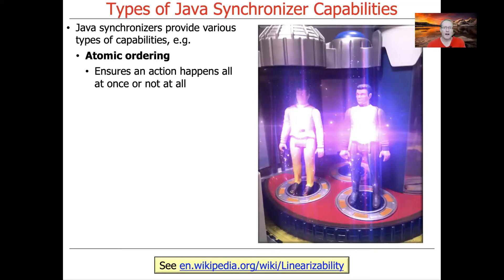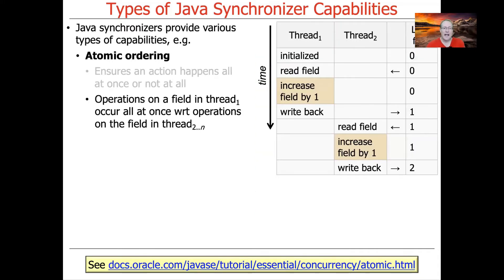Let's talk about atomic ordering in more detail. Atomicity in this context means that an action either happens all at once atomically, or it doesn't happen at all. That's sometimes called linearization — there's a link on this slide that talks about it. What we want to ensure is that operations on a field in one thread will occur all at once or not at all with respect to operations on the same field in other threads.